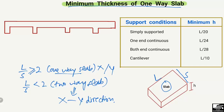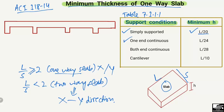In this lecture we are focused on the minimum thickness of a one-way slab according to the American Concrete Institute ACI 318-14 code. They provide Table 7.3.1.1, which gives different minimum thicknesses based on support conditions. For a simply supported one-way slab the minimum thickness is L/20; for one-end continuous it is L/24; for both-ends continuous it is L/28; and for a cantilever it is L/10.